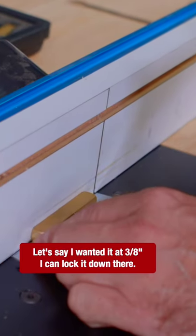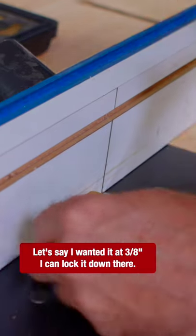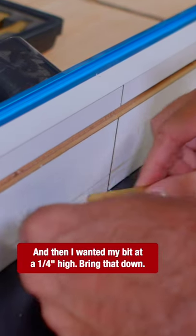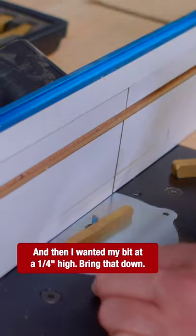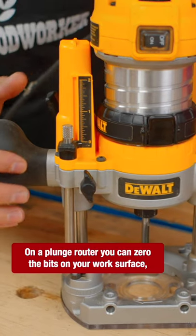You can set your fence position. Let's say I wanted it at three eighths. I can lock it down there. And then I wanted my bit at a quarter inch high, bring that down on a plunge router.